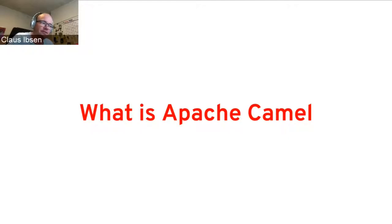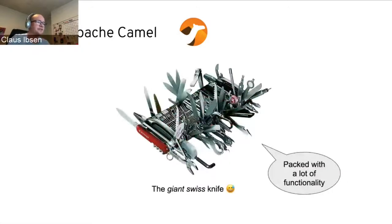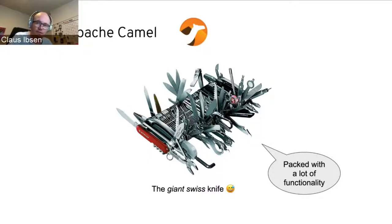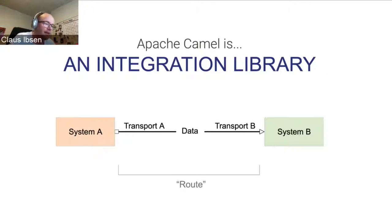For folks not familiar with Camel, I'll spend a few minutes talking about what Camel is. Camel is actually the Swiss knife of integration — you can picture it as a giant Swiss knife. It comes with a lot of functionality, but the good news is you don't have to know everything. You can use just the part of Camel you need. Camel is an integration library — you use it to integrate systems, which have different transports, protocols, and data formats. And you can integrate systems by writing Camel routes.